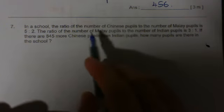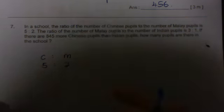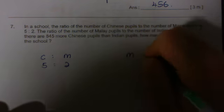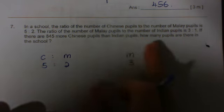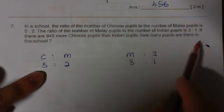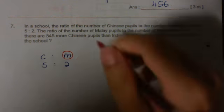Moving on. Question 7. In a school, the ratio of the number of Chinese pupils to the number of Malay pupils is 5 is to 2. So, Chinese to Malay, 5 is to 2. The ratio of the Malay pupils to the number of Indian pupils is 3 is to 1. So, Malay to Indian is 3 is to 1. If there are 845 more Chinese pupils than Indian pupils, so, I'm going to compare these two. Chinese and Indian. How many pupils are there in a school? Before I start doing that, I have to realize that something is common here. And that is the Malay pupils. So, I have to make them the same.